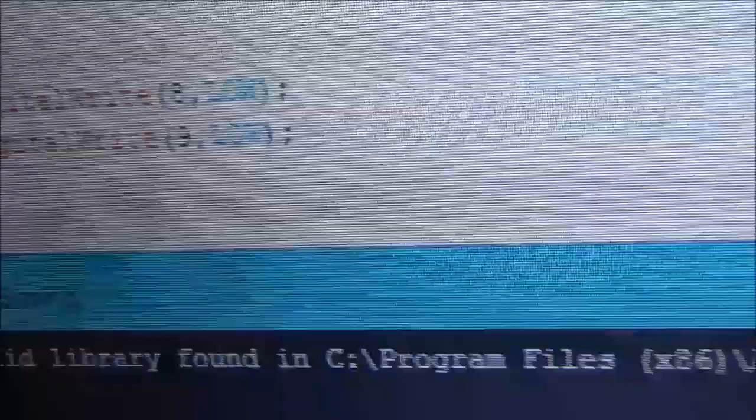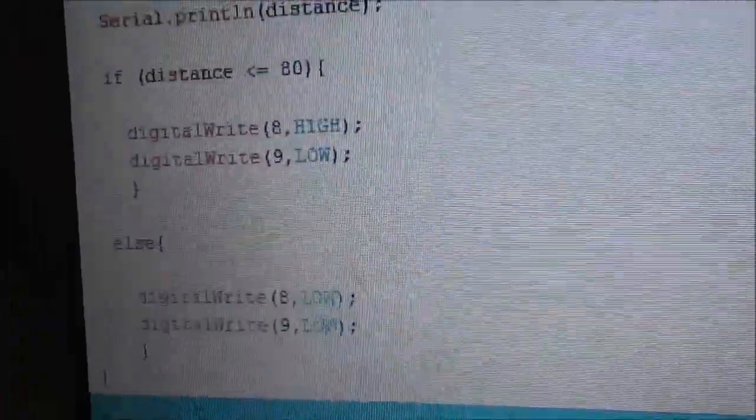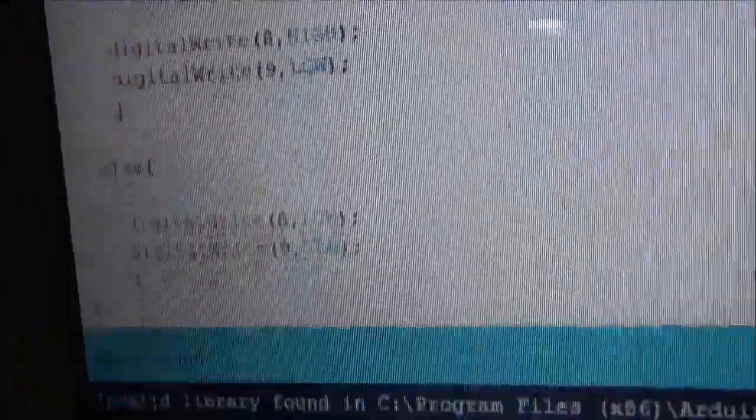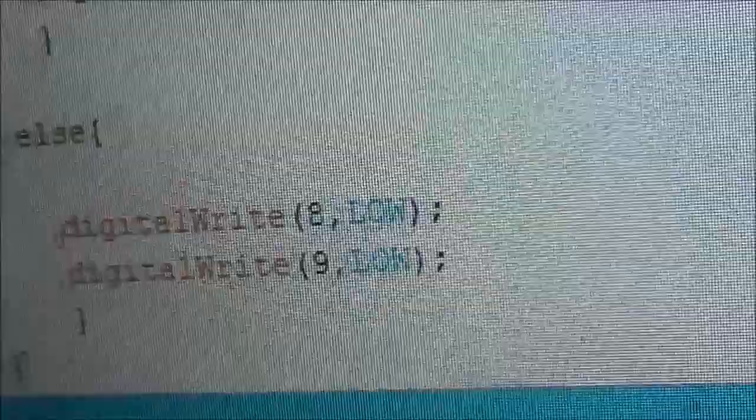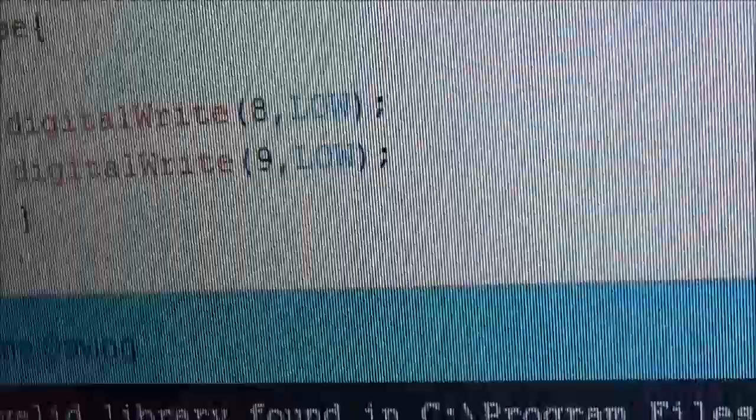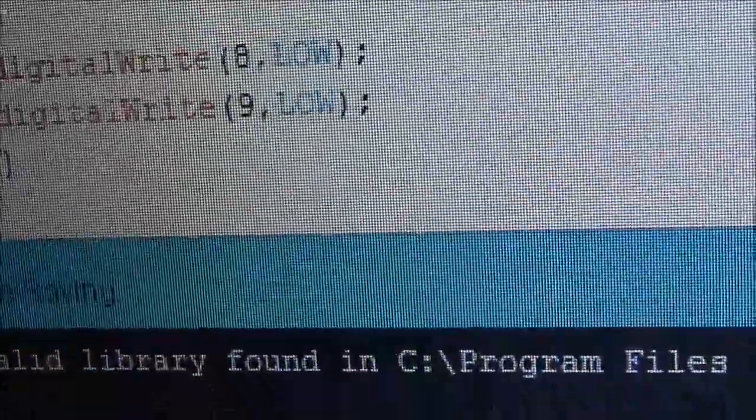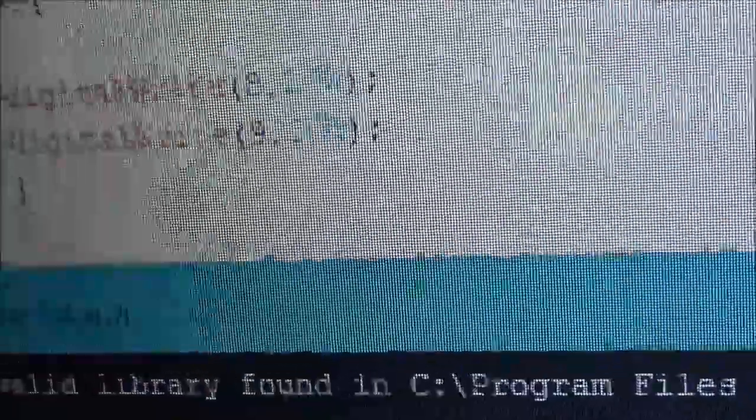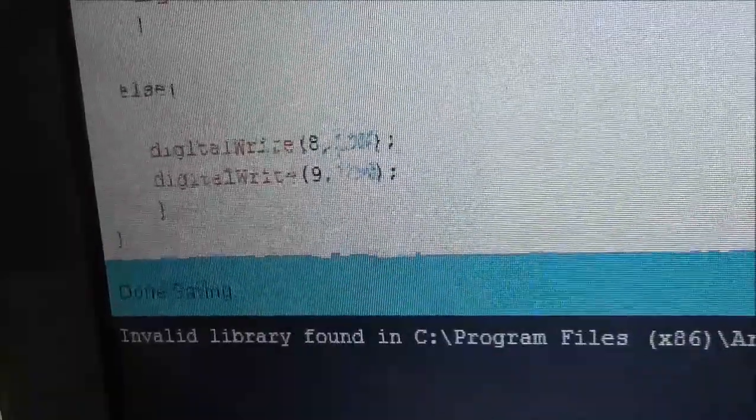And the else statement is also very simple: that if the distance is greater than 80, then this else statement will be executed. And in the else statement we're giving both pin number 8 and pin number 9 a low voltage, and hence the toy part will go off.